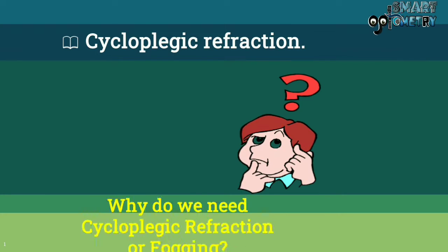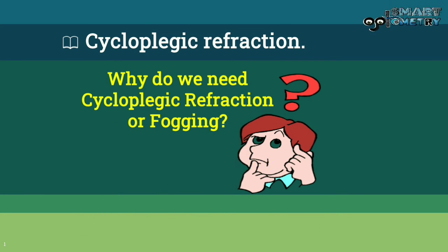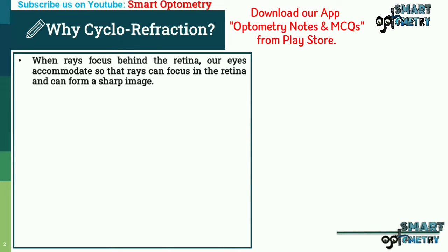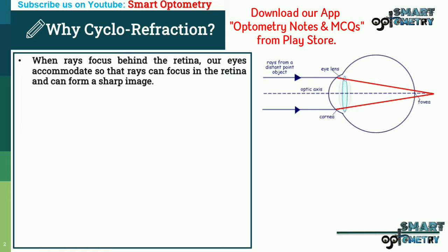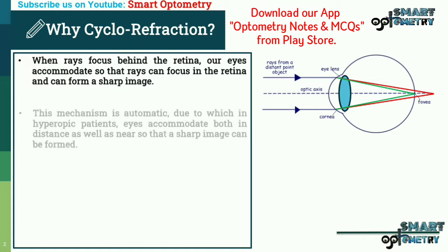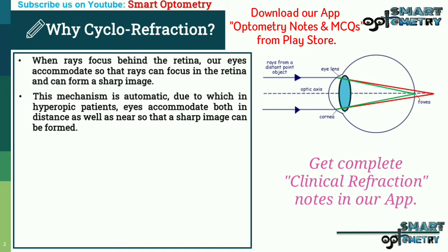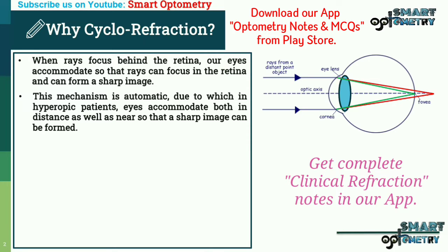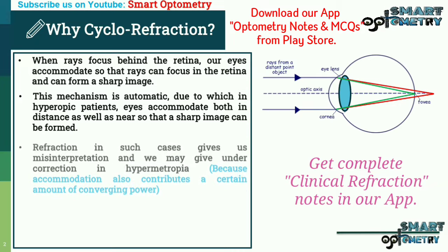Today I will discuss why we need cycloplegic refraction or fogging. When rays focus behind the retina, our eyes accommodate so that rays can focus on the retina and form a sharp image. This mechanism is automatic, due to which in hyperopic patients, eyes accommodate both at distance as well as near so that a sharp image can be formed.